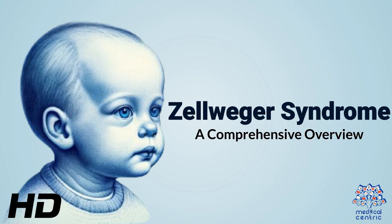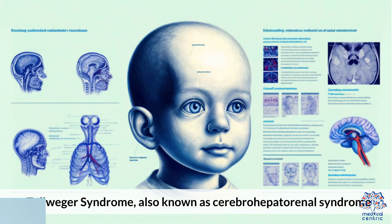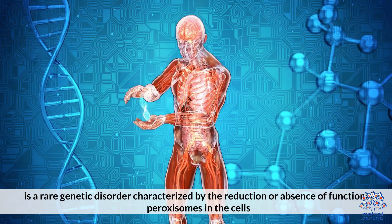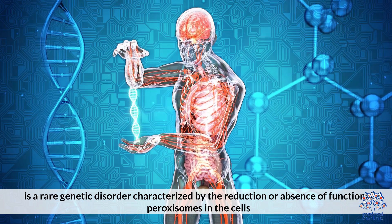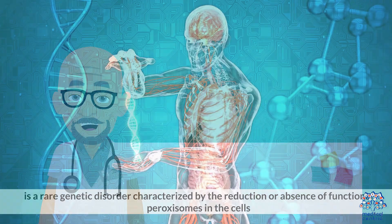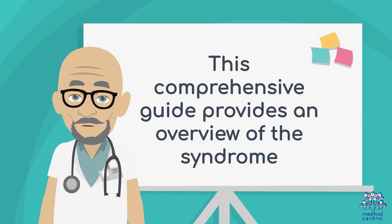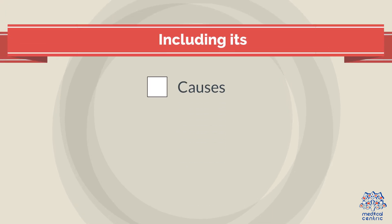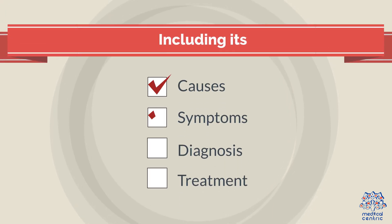Today's medical-centric topic is Zellweger Syndrome: a Comprehensive Overview. Zellweger Syndrome, also known as Cerebro-Hepatorenal Syndrome, is a rare genetic disorder characterized by the reduction or absence of functional peroxisomes in the cells. This comprehensive guide provides an overview of the syndrome, including its causes, symptoms, diagnosis, and treatment options.